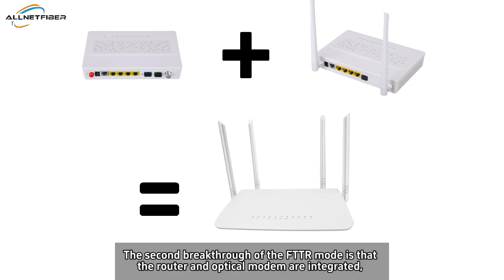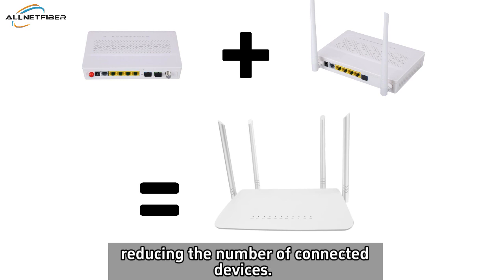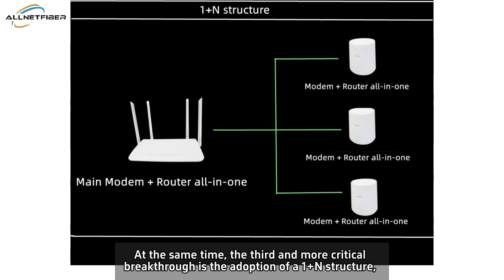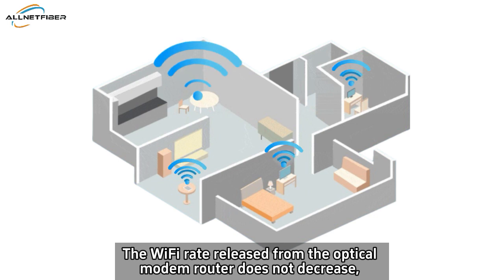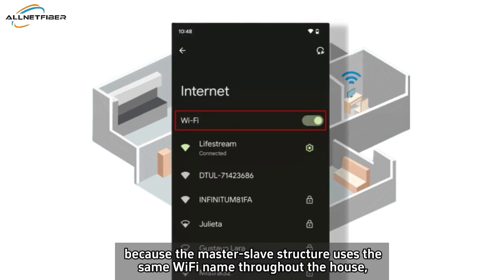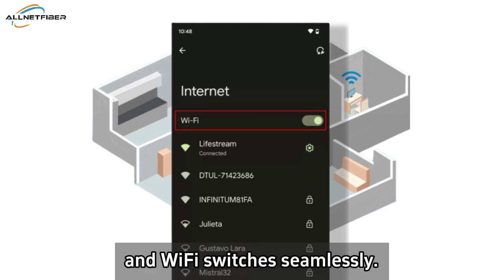The second breakthrough of the FTTR mode is that the router and optical modem are integrated, reducing the number of connected devices. At the same time, the third and more critical breakthrough is the adoption of a 1-plus-N structure, where the Master-Slave optical modem router all-in-one machine shares the bandwidth. The Wi-Fi rate released from the optical modem router does not decrease, because the Master-Slave structure uses the same Wi-Fi name throughout the house, and Wi-Fi switches seamlessly.